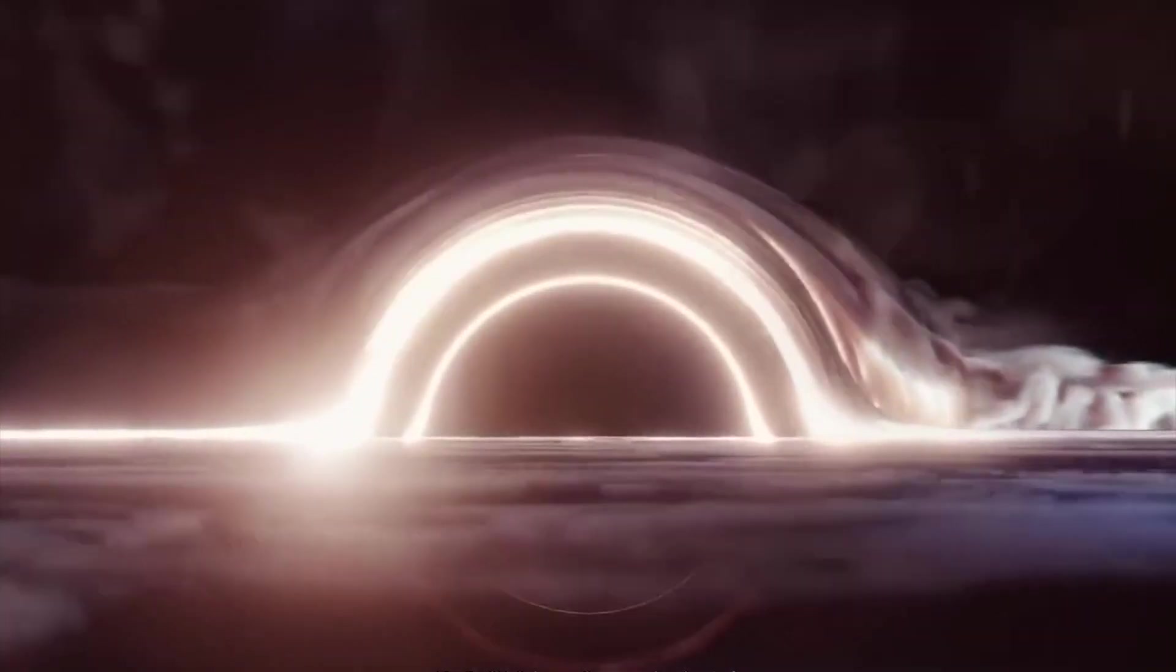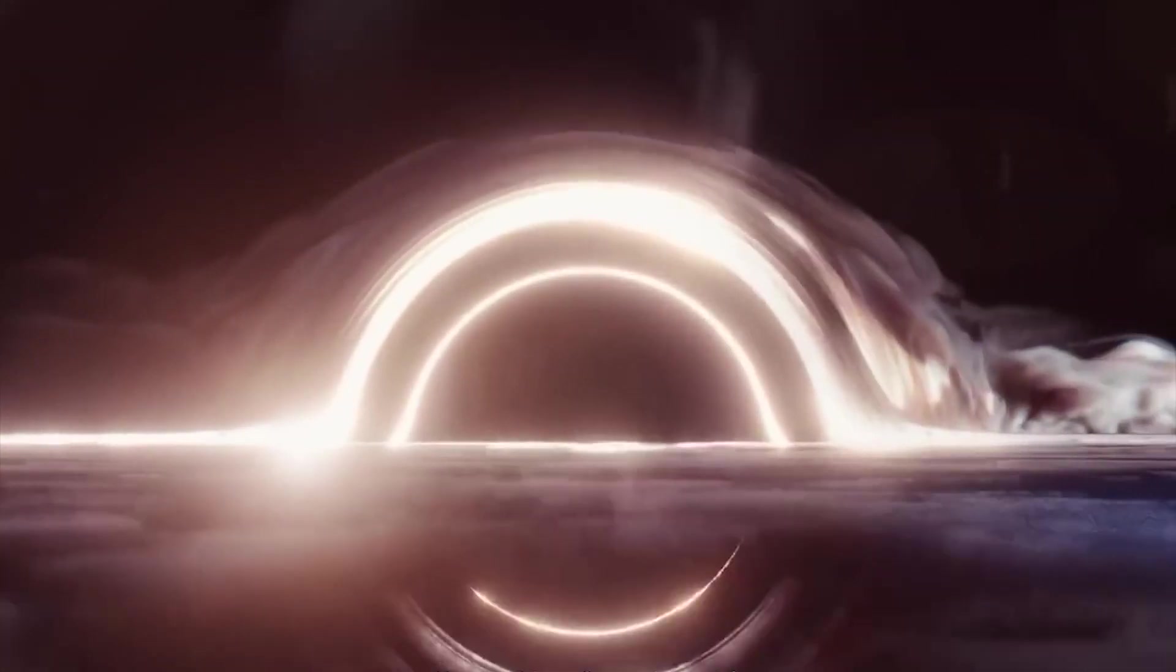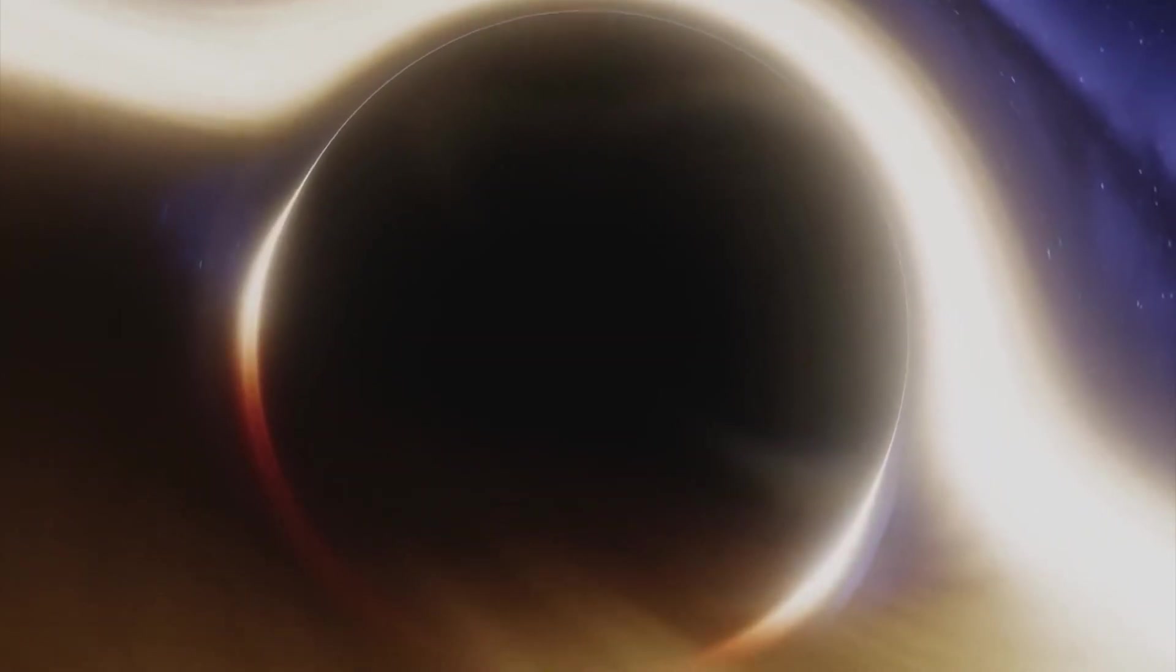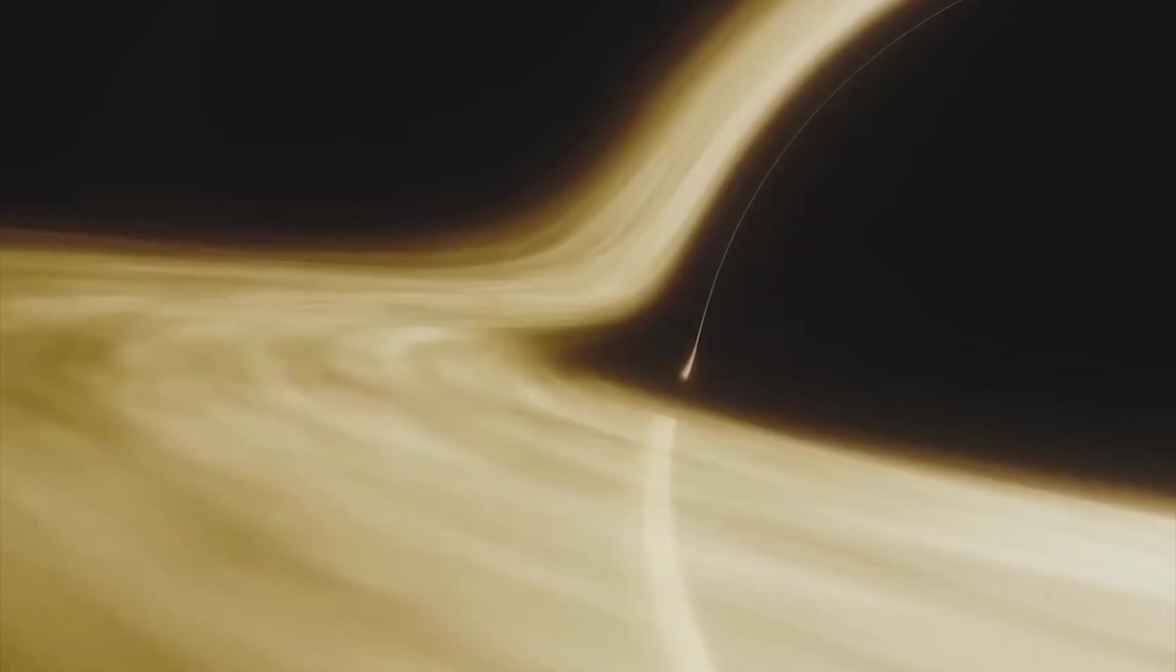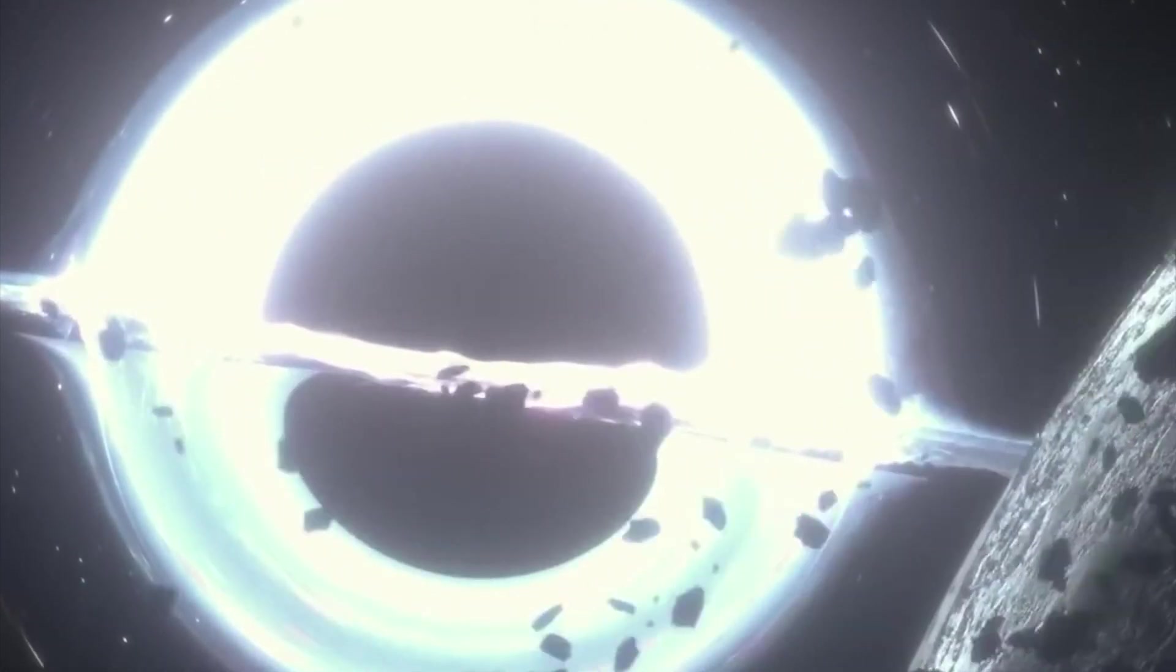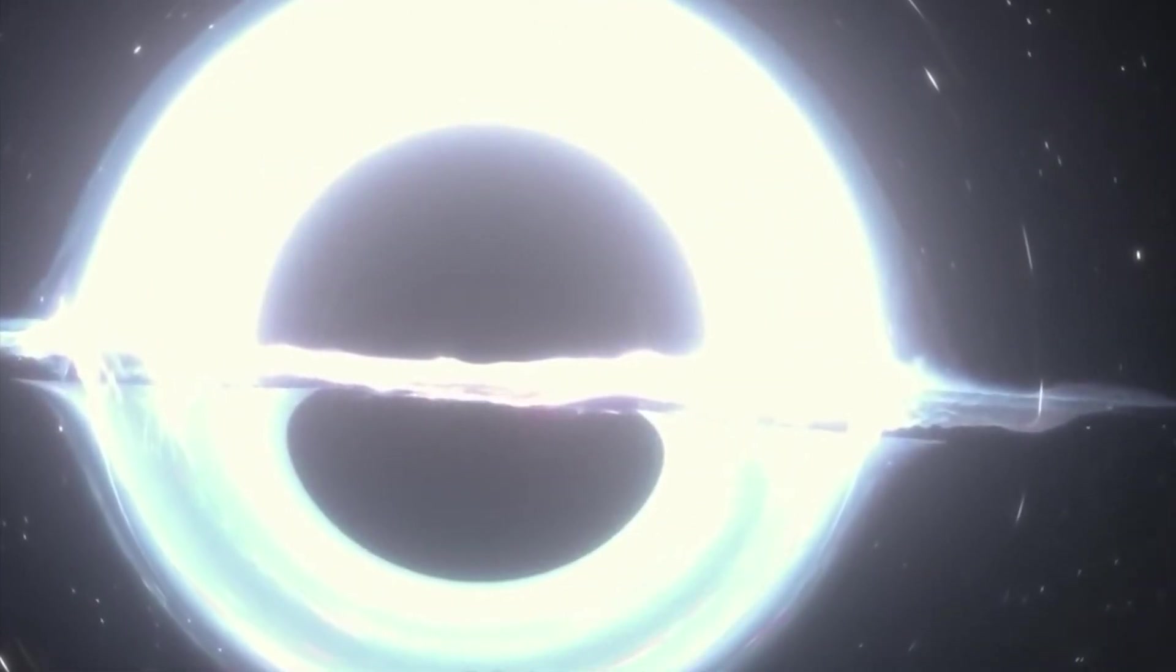Supermassive black holes are the largest and can have a mass greater than a million suns combined, but still fit inside of a ball the size of the solar system in diameter. Science believes that most large galaxies have a supermassive black hole at its core and that they are created at the same time as their respective galaxies.